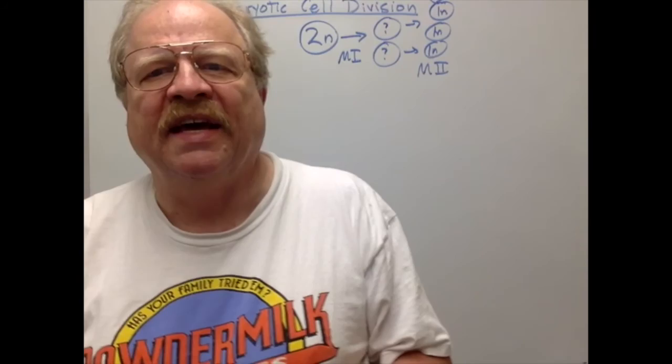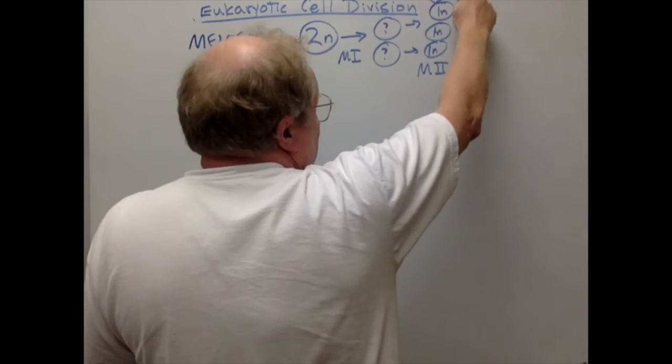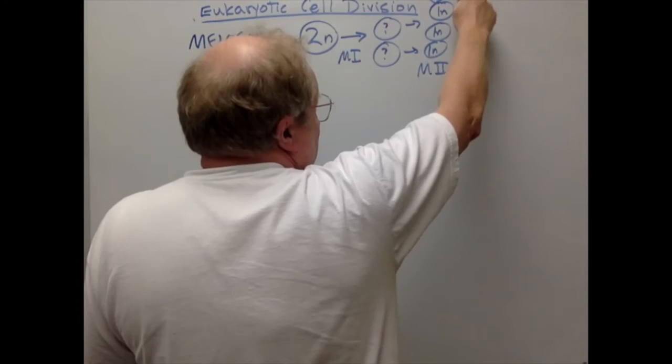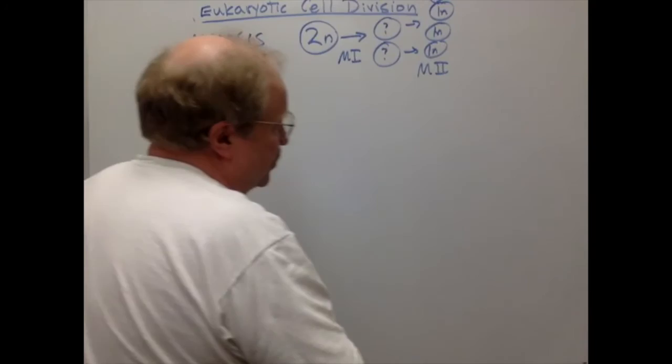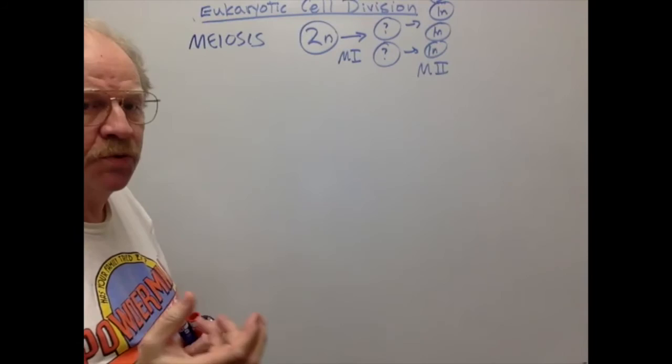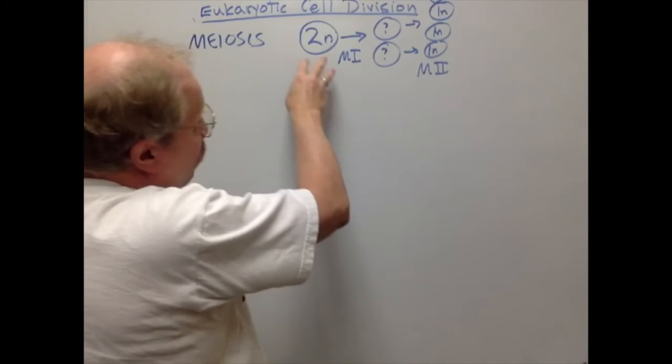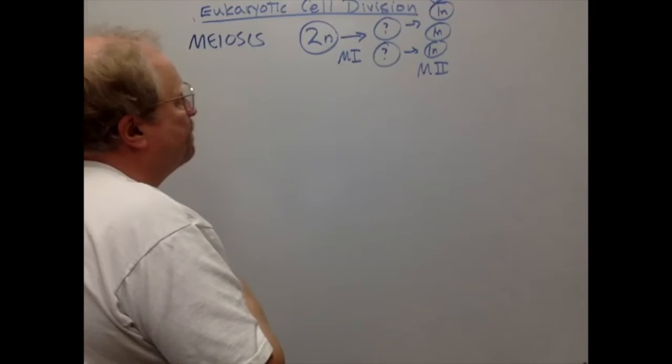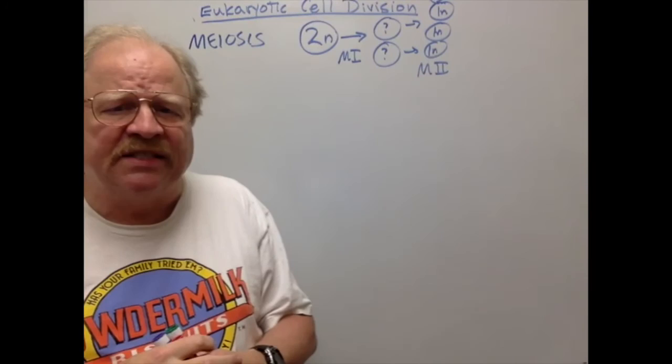Meiosis always occurs in two divisions. Instead of making identical cells as mitosis does, it makes non-identical cells — all four cells will be different from each other and all haploid, whereas the original cell is diploid. Meiosis occurs only in cells that produce sex cells; in higher animals, this would occur in the ovary or testis to produce egg or sperm cells.